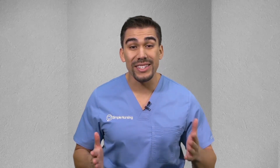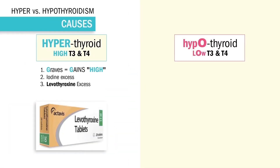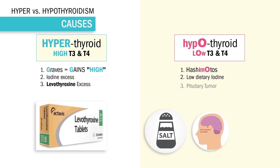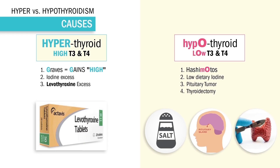Balancing these two conditions is like a teeter-totter — hyper will be the exact opposite of hypo. Low T3 and T4 in hypothyroidism comes from the autoimmune disease Hashimoto's — that low and slow thyroid. Other causes include low iodine in the diet, a pituitary tumor — big test tip here — and antithyroid treatments like a thyroidectomy, where the thyroid gland is removed and the body can't produce any thyroid hormones at all.